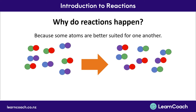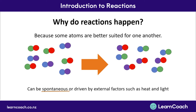Sometimes reactions can occur spontaneously, meaning they just happen because two different compounds come in contact with each other. However, some reactions require help, which can come from various external factors — things not within the reaction itself — such as UV light or adding heat. Reactions occur because some elements are more active than others, and atoms will seek out other more active elements.